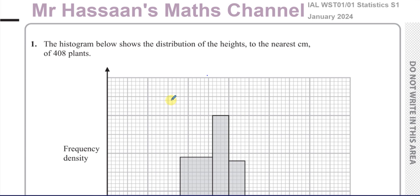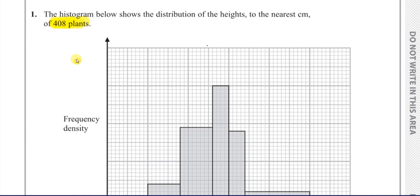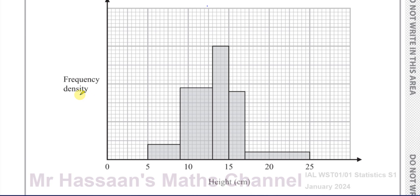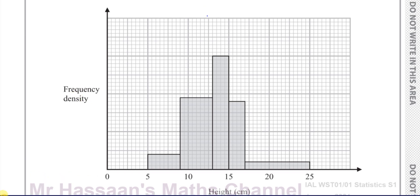So let's start with question number one. It says the histogram below shows the distribution of the heights to the nearest centimeter of 408 plants. So straight away we can understand that there's 408 entries in the data. Now a histogram is something that looks a bit like a bar chart, but it's not a bar chart at all, because in a bar chart the height of the bars give you the frequency, whereas in a histogram it is the area of the bar which is related to the frequency entries in that particular group.